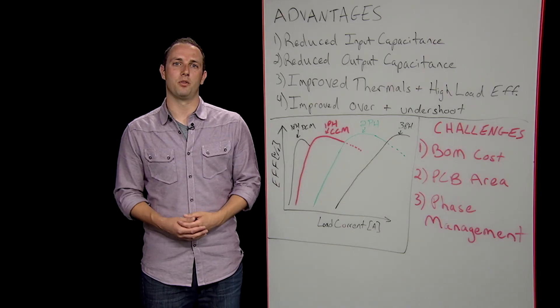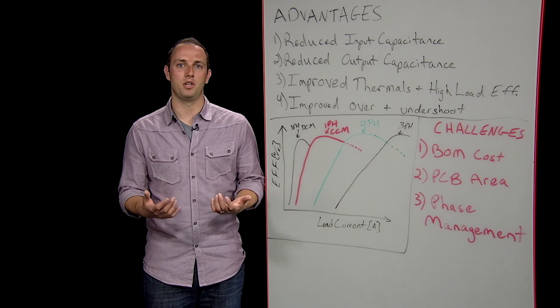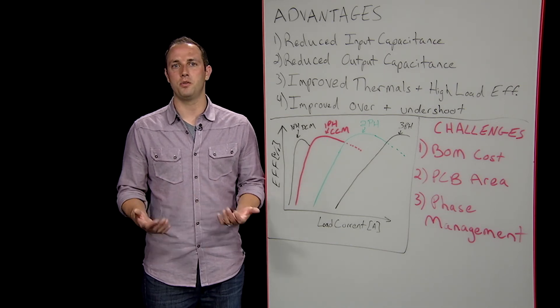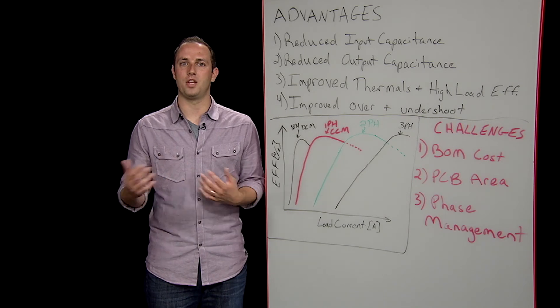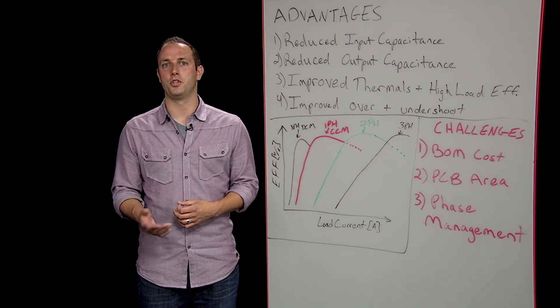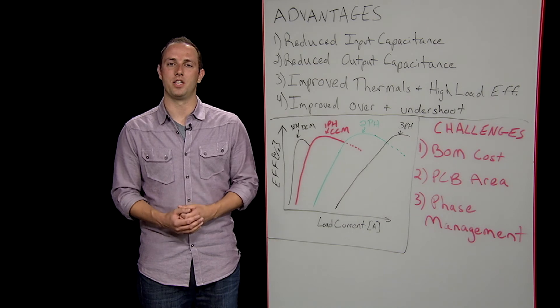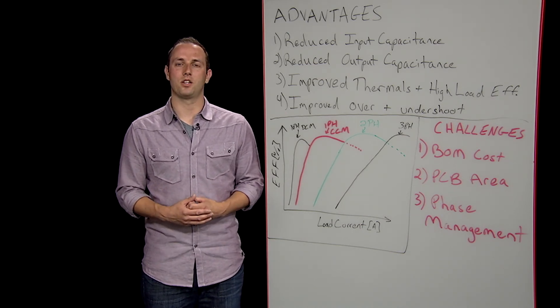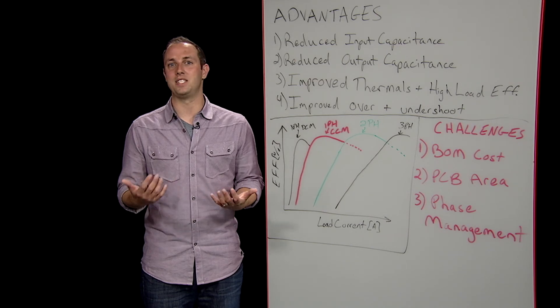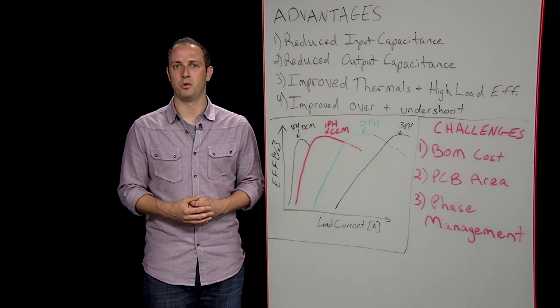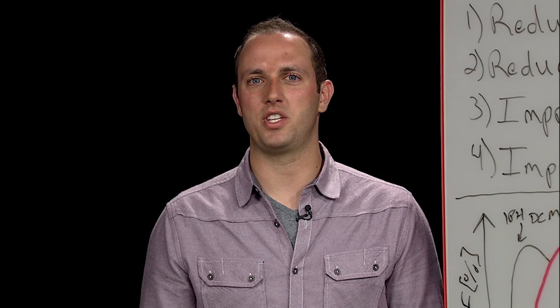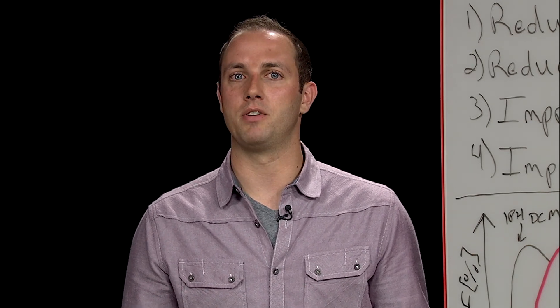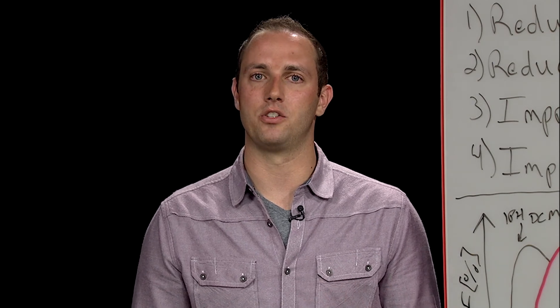The biggest challenge that comes from moving to a multi-phase design is the issue of phase management. In order to get the highest performance out of the regulator, load currents must be distributed evenly between all active phases. Without good current balancing, you lose the benefits of ripple cancellation on the input and outputs, which can throw your input voltage or output voltage out of spec, potentially causing stability issues. Current balance is also responsible for keeping the FETs and inductors from being thermally stressed and possibly damaged by excessive current flowing through them. A phase that's only expecting 30 amp max may just get a bit hotter than expected at 35 amps, but could blow up at 40 if an inductor saturates or a FET exceeds its current limit.